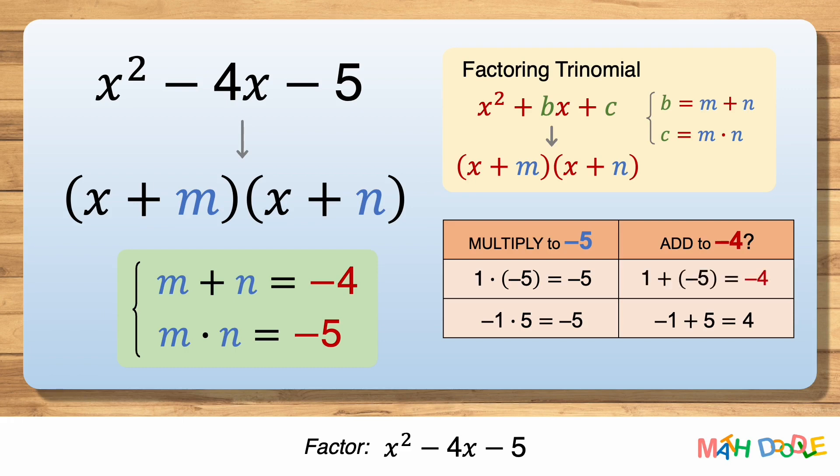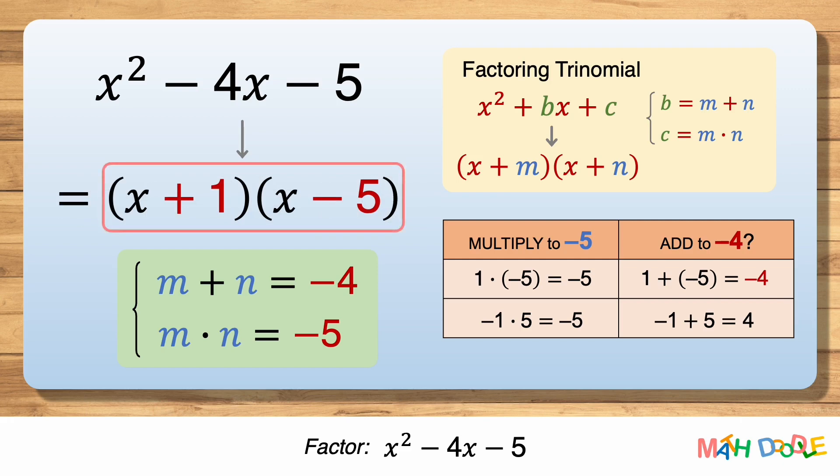And 1 plus minus 5 is minus 4. So 1 and minus 5 not only multiply to minus 5 but also add to minus 4. This means m and n are 1 and minus 5. So the answer is x plus 1 times x minus 5.